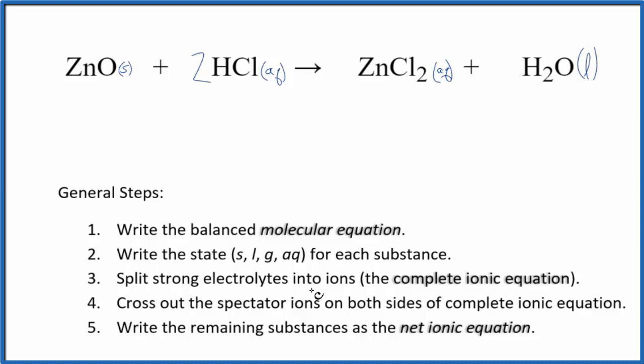Now we can split the strong electrolytes into their ions for the complete ionic equation. We won't split the zinc oxide up, that's a solid, so we'll just have zinc oxide. For hydrogen, that's in group one on the periodic table, has a one plus charge. The chloride ion, one minus. Hydrochloric acid, a strong acid that's aqueous, so we can split this up: two hydrogen ions plus two chloride ions.